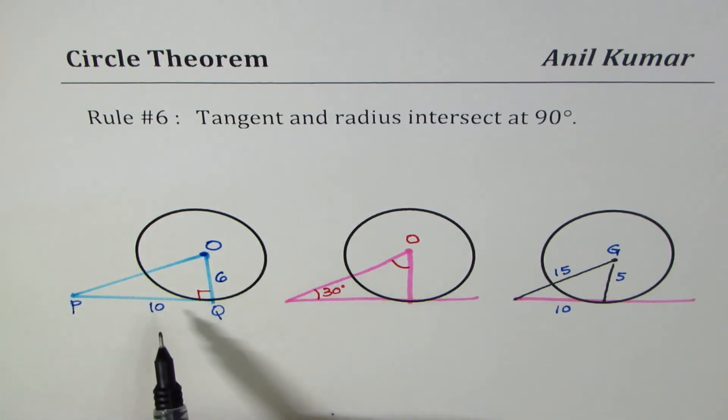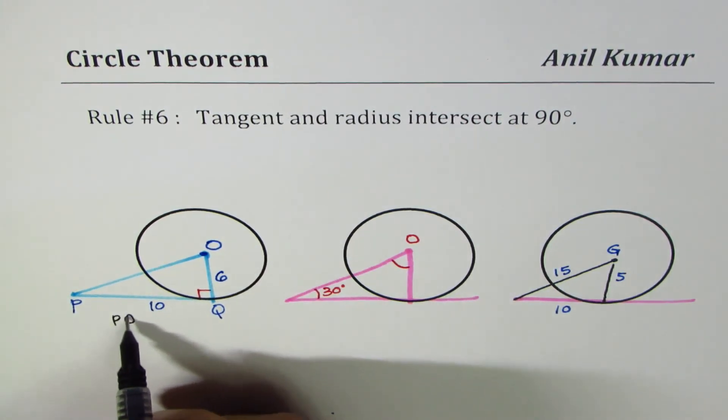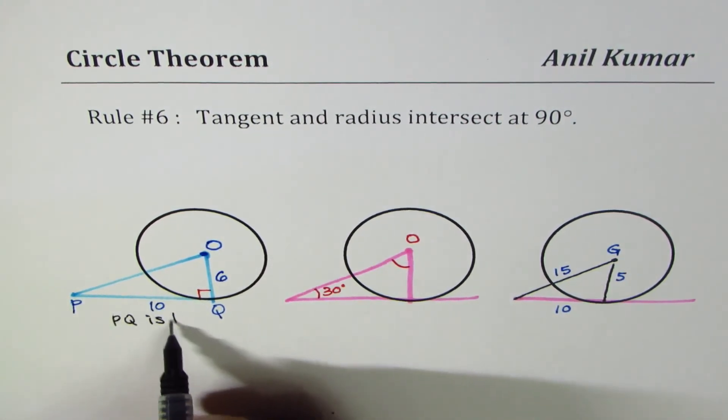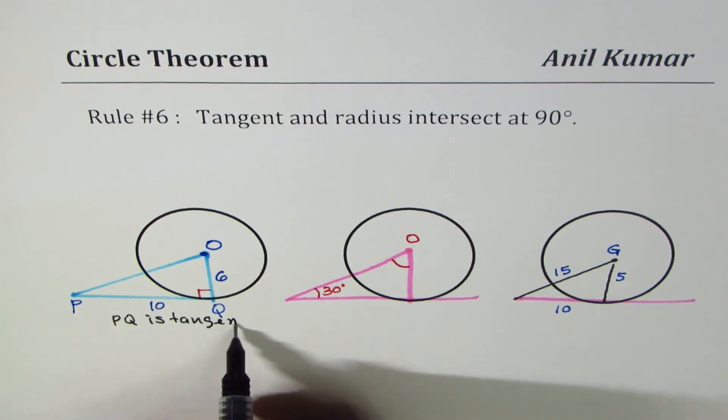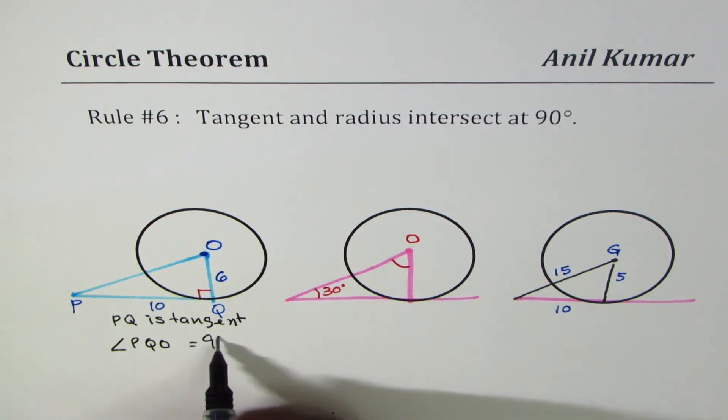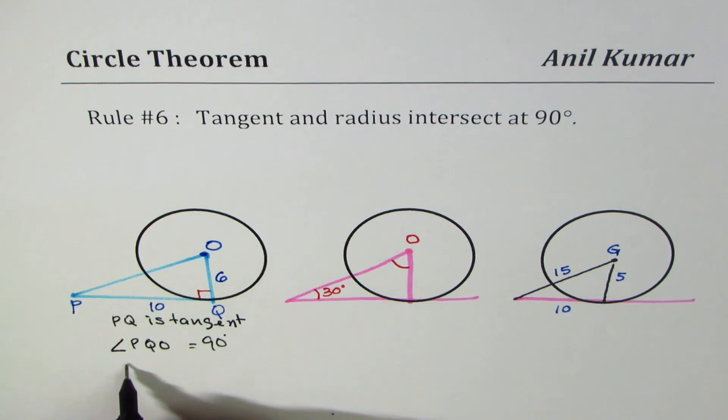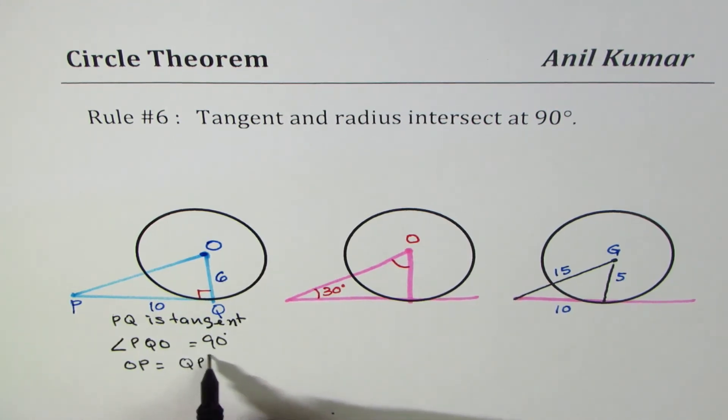Let's begin with the very first one. Since we know that PQ is tangent, angle PQO equals 90 degrees. So we have a right triangle. In a right triangle, OP squared should equal QP squared plus OQ squared, and OP will be the square root of that.